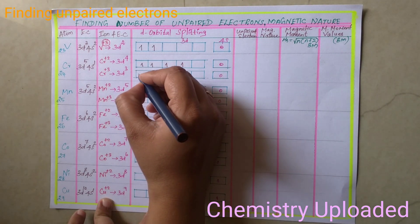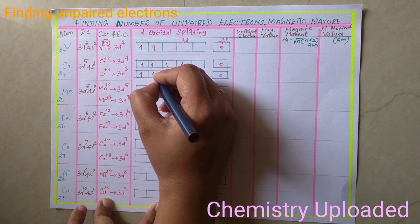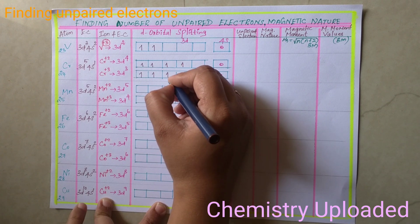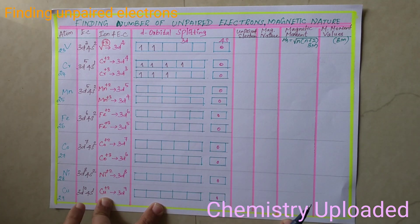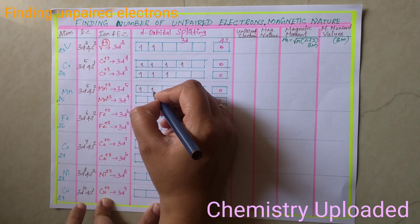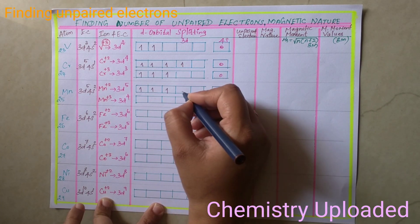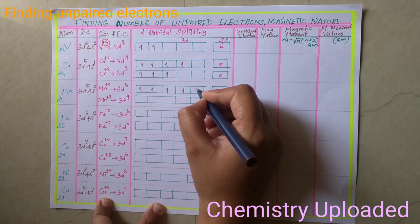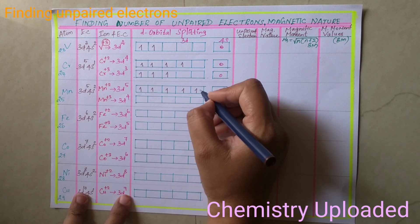For d3, fill 1 electron in each of 3 orbitals. For d5, fill 1 electron in each of all 5 orbitals — one in each box.